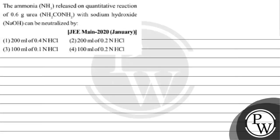Hello Bacho, let's read this question. The question says: Ammonia released on quantitative reaction of 0.6 gram of urea (NH2CONH2) with sodium hydroxide (NaOH) can be neutralized by - Option 1: 200 ml of 0.4 normal HCl, Option 2: 200 ml of 0.2 normal HCl, Option 3: 100 ml of 0.1 normal HCl, Option 4: 100 ml of 0.2 normal HCl.